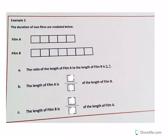Alright, example two. Duration of two films are modeled below. Duration is just a fancy word for length, the length of two films. For film A, we have one, two, three, four, five parts of our tape diagram that are equal. For part B, we have one, two, three, four, five, six, seven parts of the tape diagram.